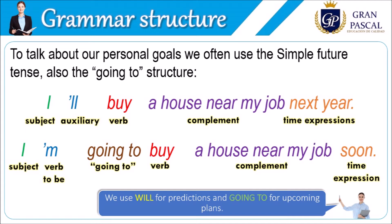For example: 'I'll buy a house near my job next year.' The structure here is that you start with the subject, then the auxiliary — here the auxiliary 'will' is contracted — then you continue with the verb, the complement, and a time expression at the end.